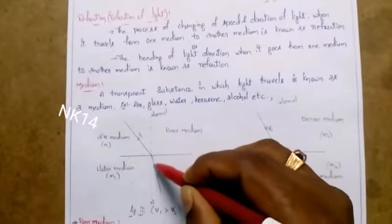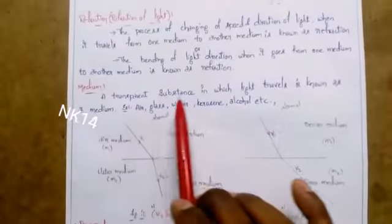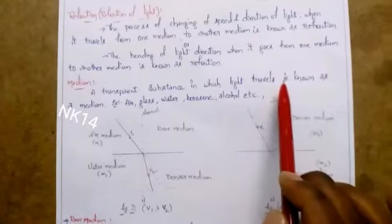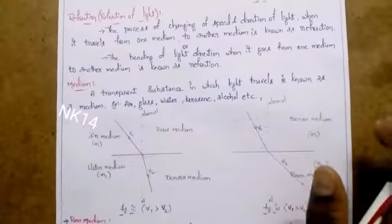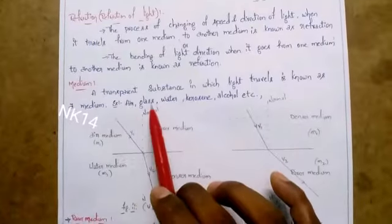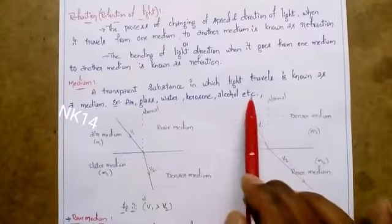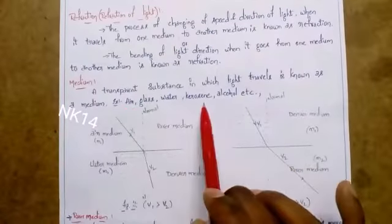Next, what is medium? A transparent substance in which light travels is known as a medium. So medium means it is transparent; it should allow the light to pass through it. Examples are air, glass, water, kerosene, alcohol, etc. For all of these, the densities will be different. Based on the densities, the light speed will be varying.